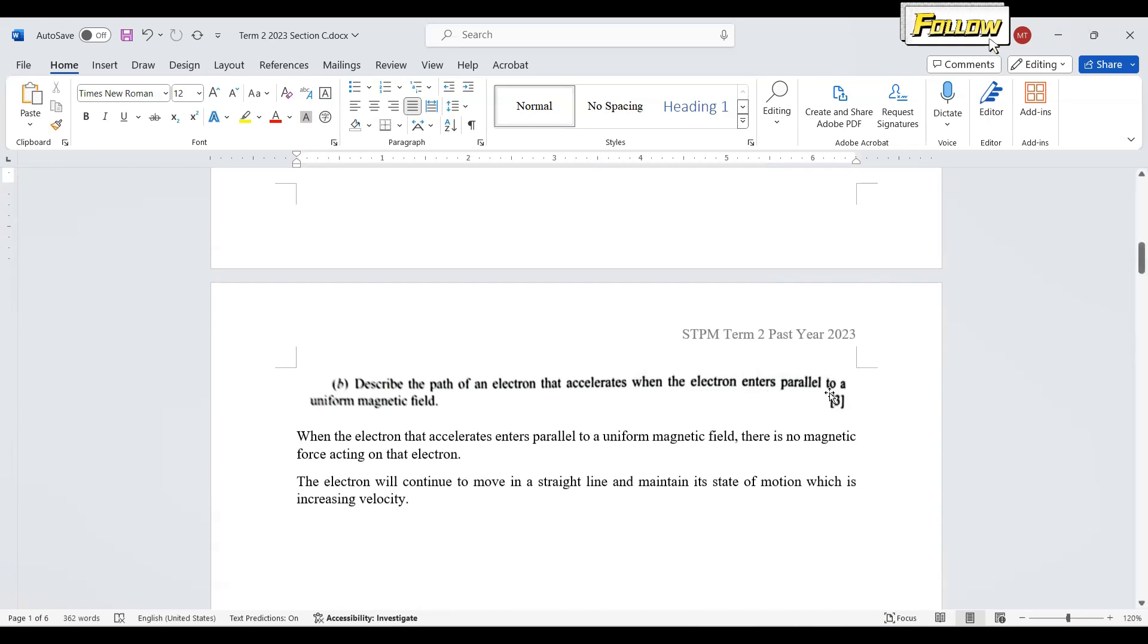When the direction is parallel to a uniform magnetic field, there is no magnetic force. According to Newton's first law of motion, an object will maintain its state of motion if there is no external force.